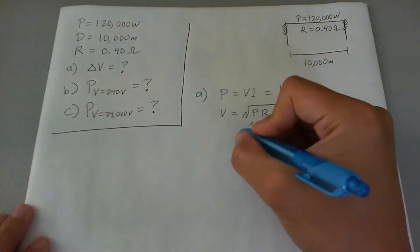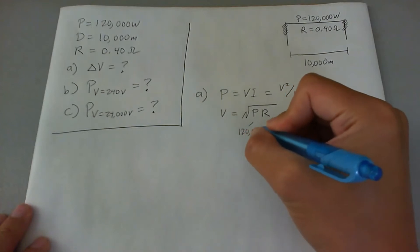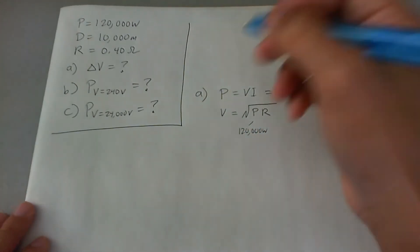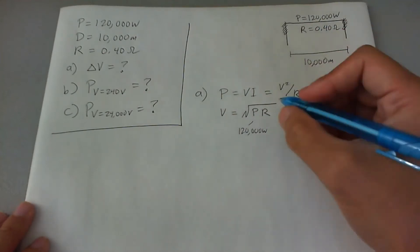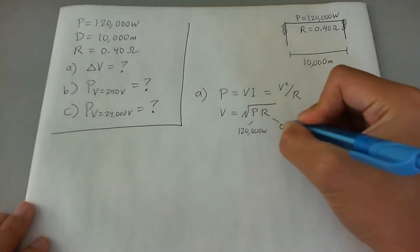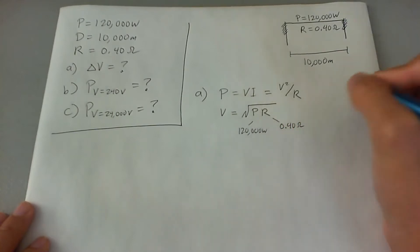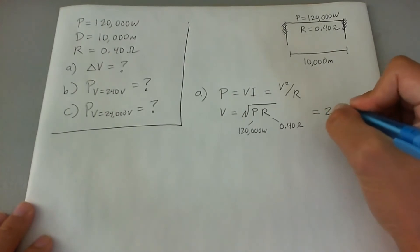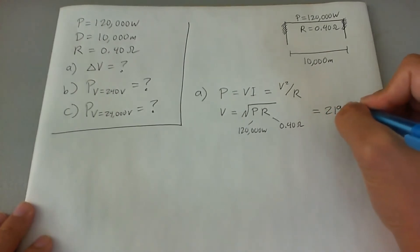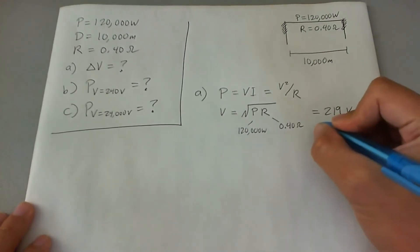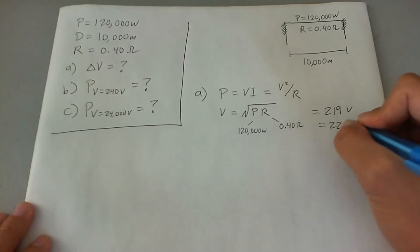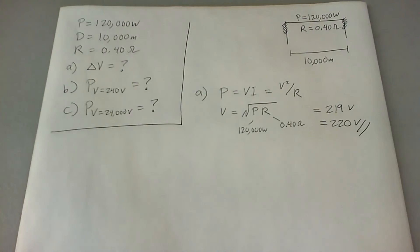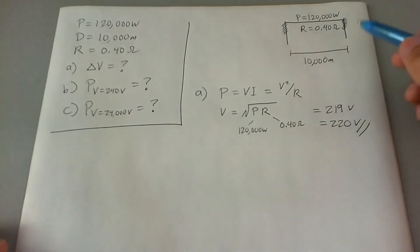You can go ahead and plug in the fact that there's 120,000 watts of power loss in the lines. The resistance of the lines is 0.40 ohms, and so the voltage drop would be 219 volts — or within significant figures, 220 volts. That's the voltage drop for the initial condition shown here.